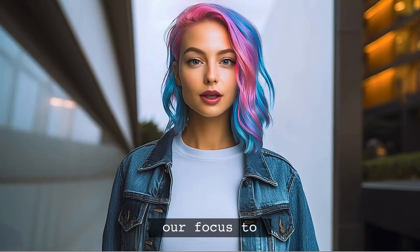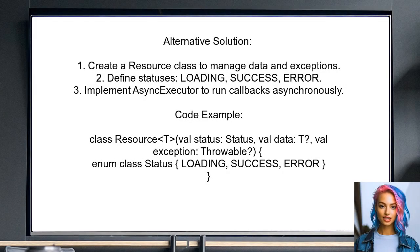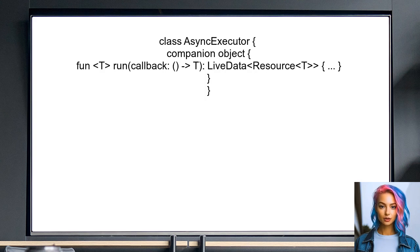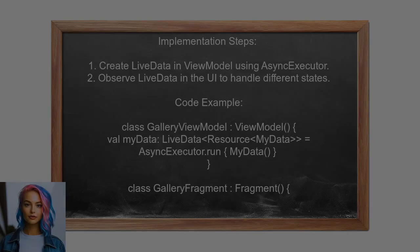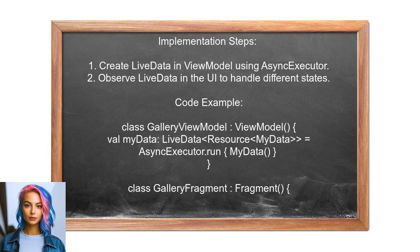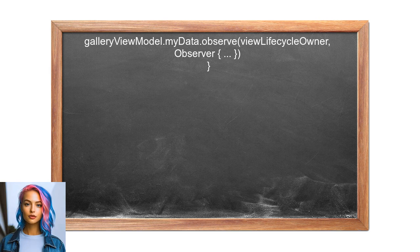Shifting to a different response: this user suggests creating a generic class called Resource to manage response data and exceptions. The Resource class has three statuses — loading, success, and error. They also introduce an AsyncExecutor class that runs a callback asynchronously, returning a live data object that captures the loading state, success result, or any exceptions. In the view model, you can create live data that uses AsyncExecutor to handle synchronous operations and exceptions. In the UI, observe this live data to react to loading, error, or success states.